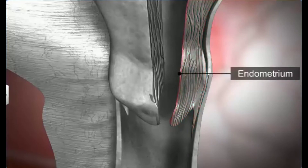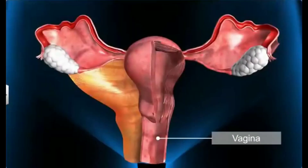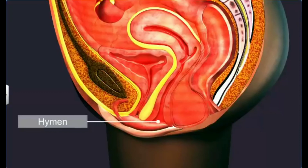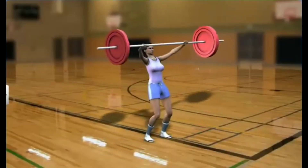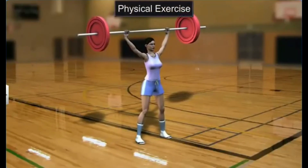The inner glandular layer is called the endometrium, and it undergoes cyclical changes during the menstrual cycle. The vagina is a muscular tube starting from the lower end of the uterus to the outside. The opening of the vagina in young females is partially covered by a thin membrane called the hymen. The hymen is frequently ruptured in childhood due to strenuous physical exercise.